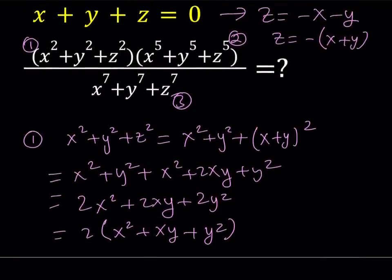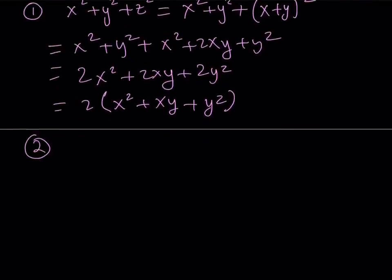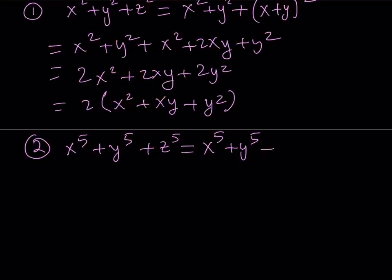In my second expression, I'll do the same thing. My second expression is the sum of fifth powers, and I'm going to replace z with the opposite of x plus y. When I replace z with this, I can take out a negative 1 — negative 1 to the fifth power is negative 1 — so I can just pull out a negative sign, and that's going to look like this.